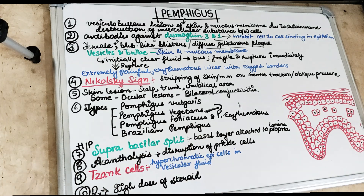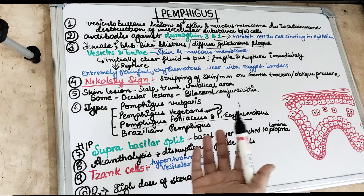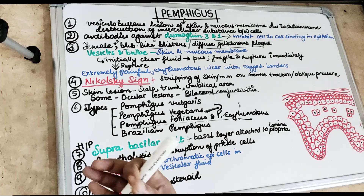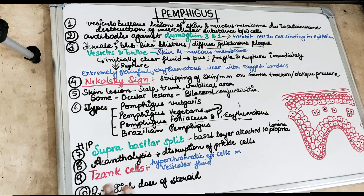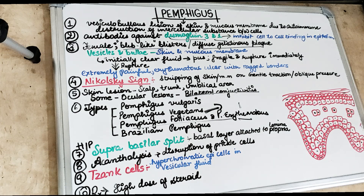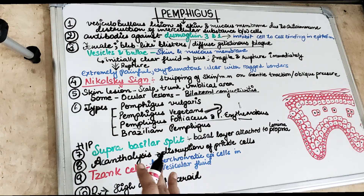Pemphigus foliaceus or pemphigus erythematosus are rare forms. As the name suggests, pemphigus erythematosus involves erythema of the skin. Both of these lesions resemble exfoliative dermatitis. There is also Brazilian pemphigus, which is the endemic form present in Brazil.